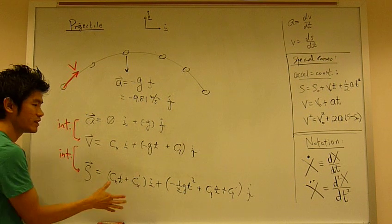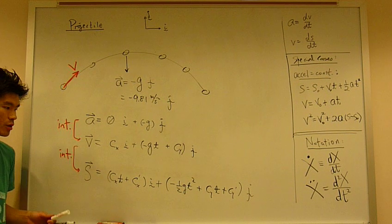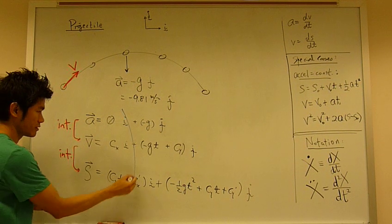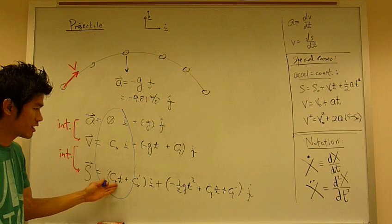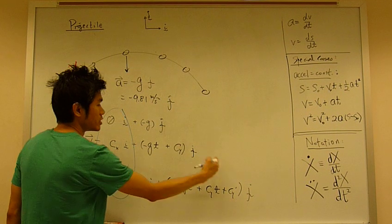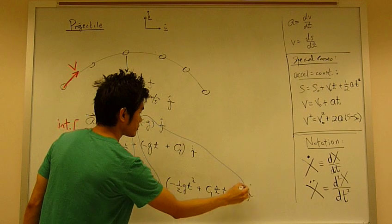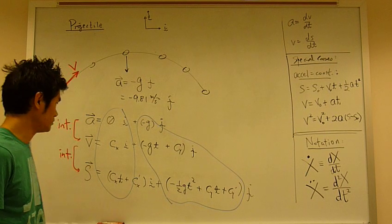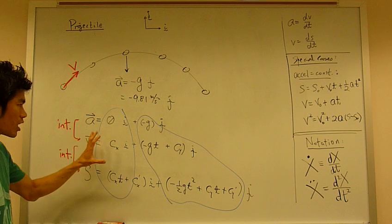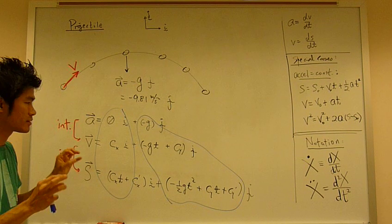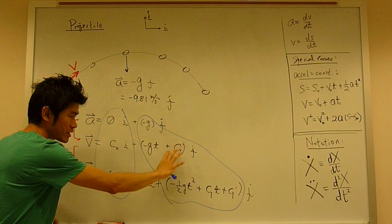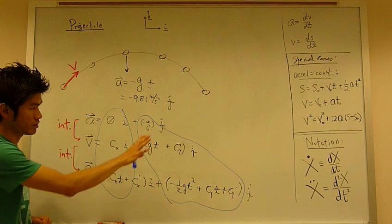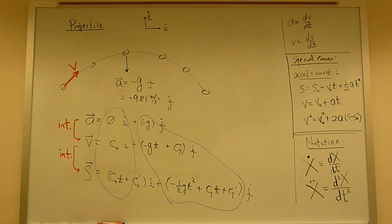Now we have these three equations, and we can analyze them independently in each direction. In the i-direction, it behaves this way. In the j-direction, it behaves as such. That's why we say that projectile motion can be analyzed independently in each direction - the i-direction can be handled independent from the j-direction. An example.